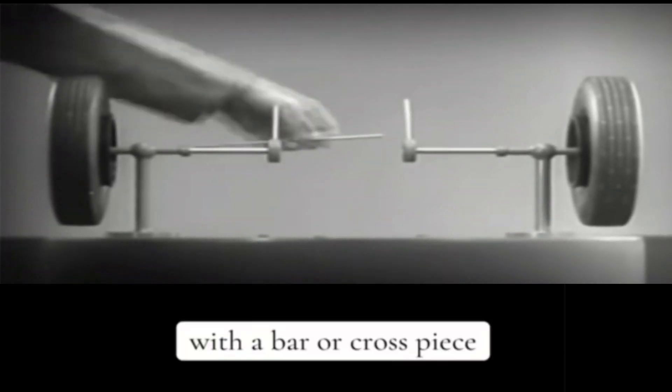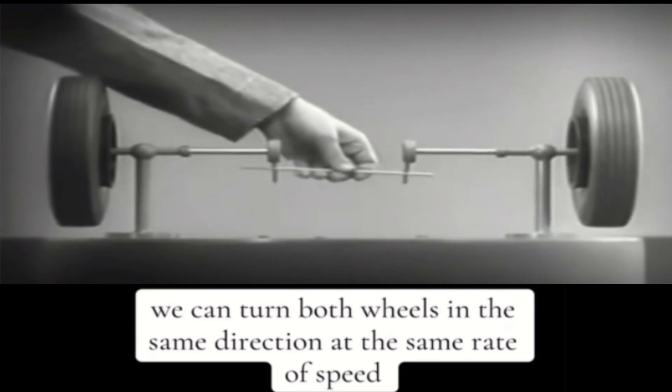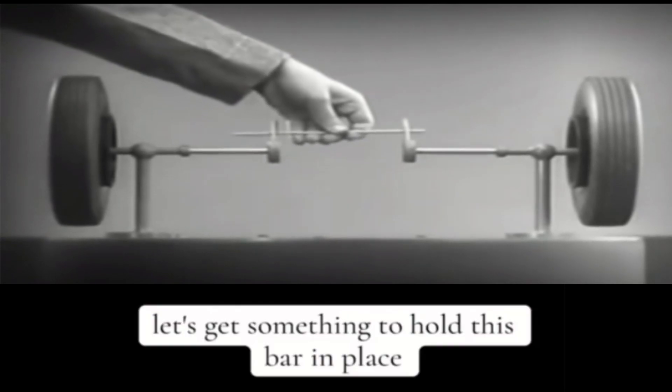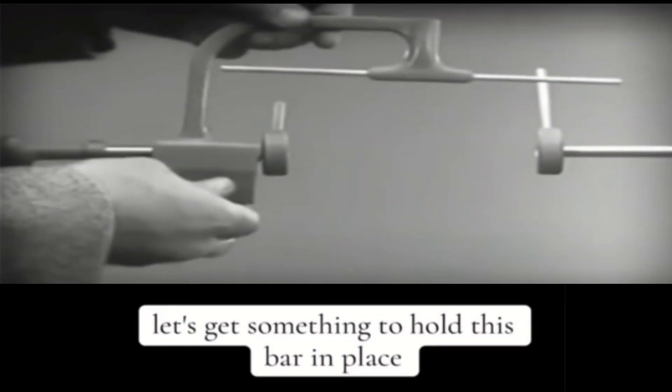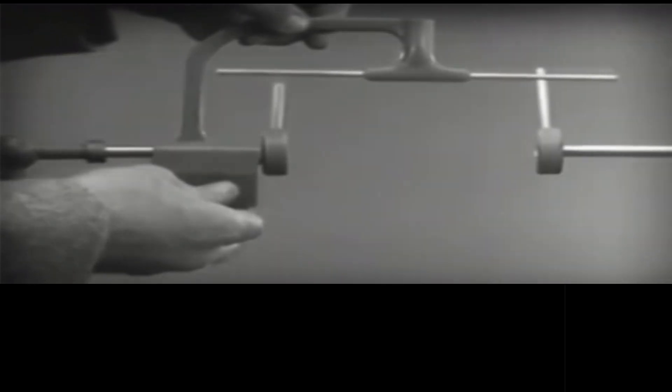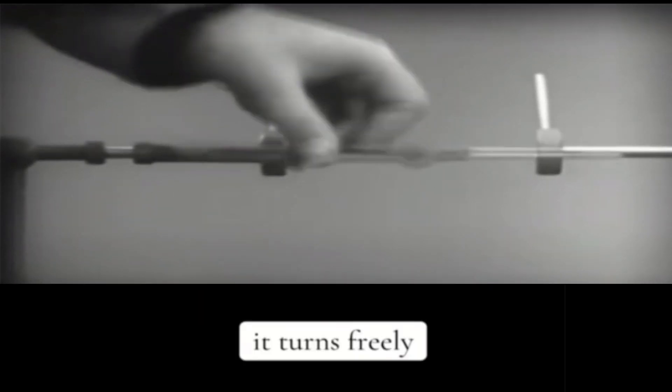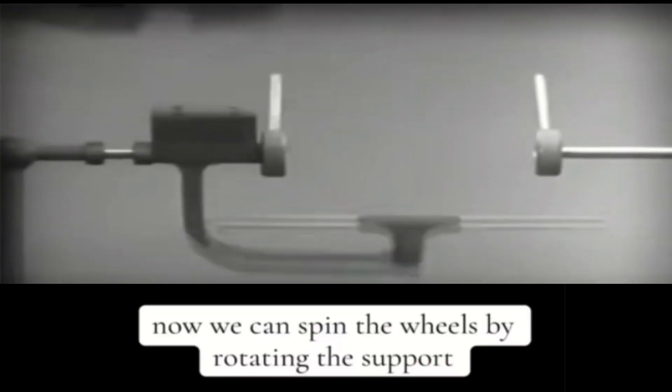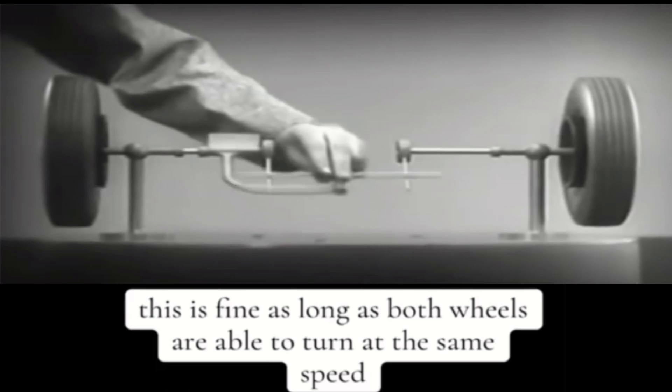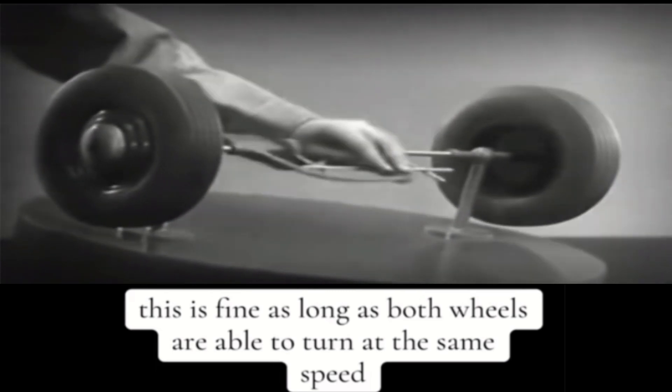With a bar or crosspiece, we can turn both wheels in the same direction at the same rate of speed. Let's get something to hold this bar in place so that it will press against the spokes. Notice that this support is not locked to the axle. It turns freely. Now we can spin the wheels by rotating the support. This is fine as long as both wheels are able to turn at the same speed.